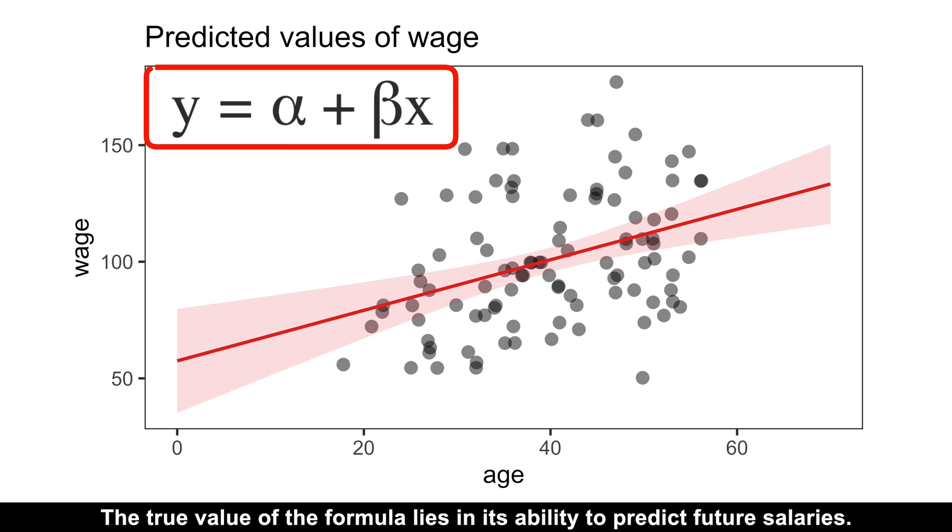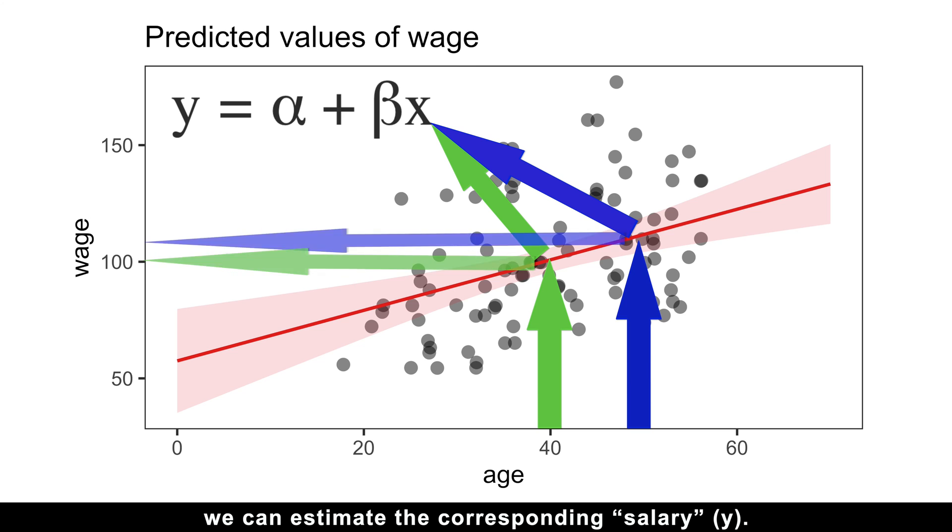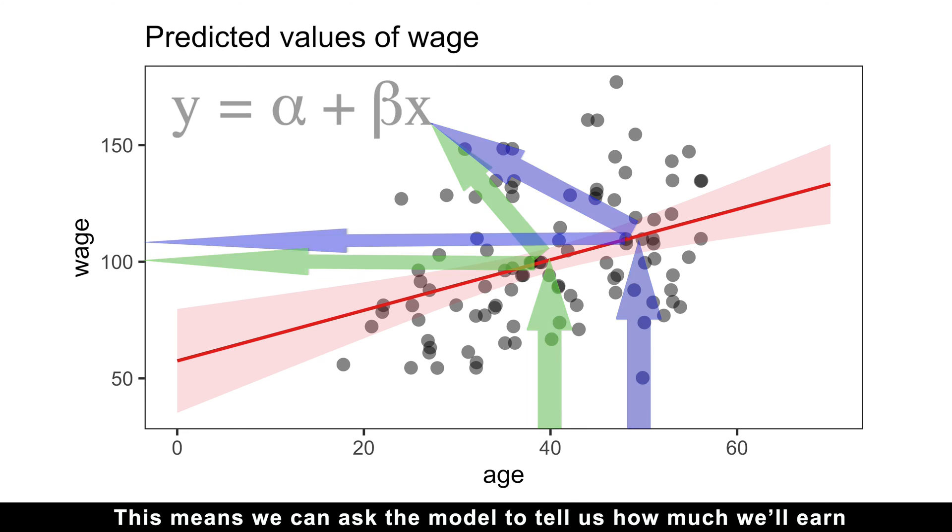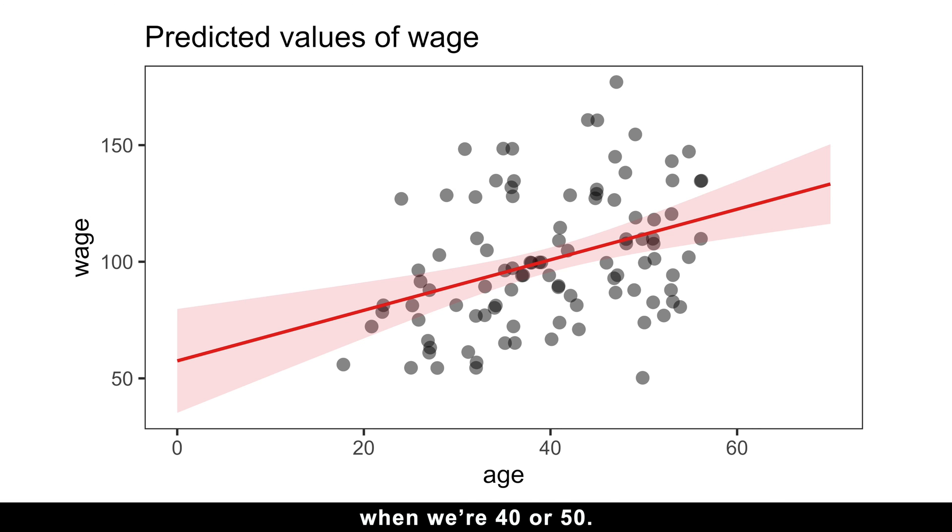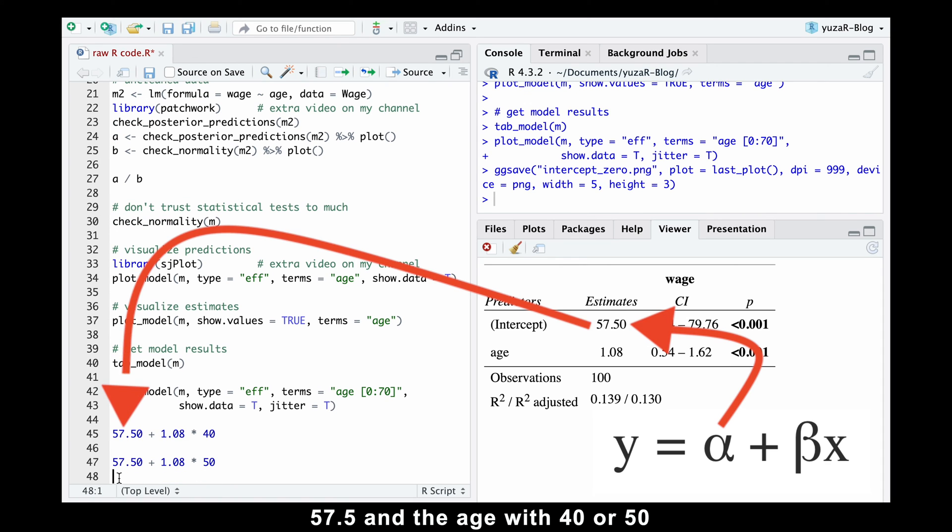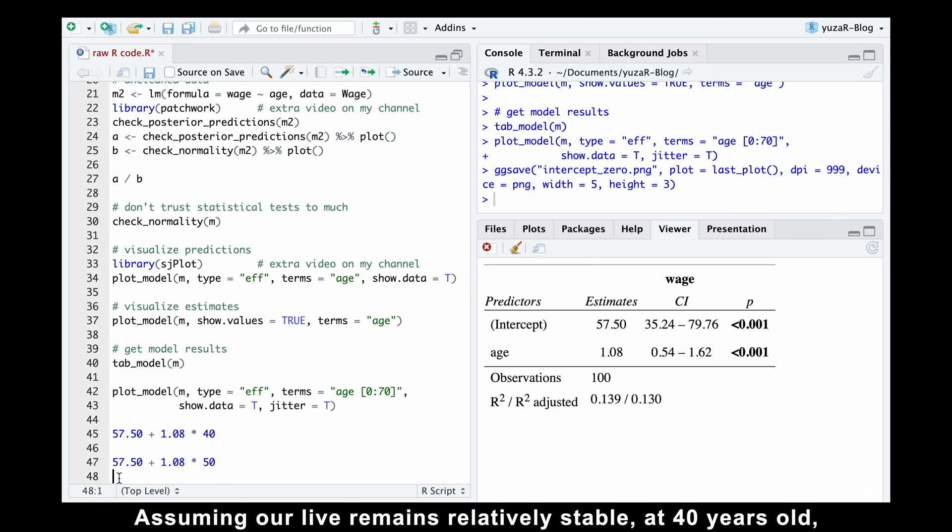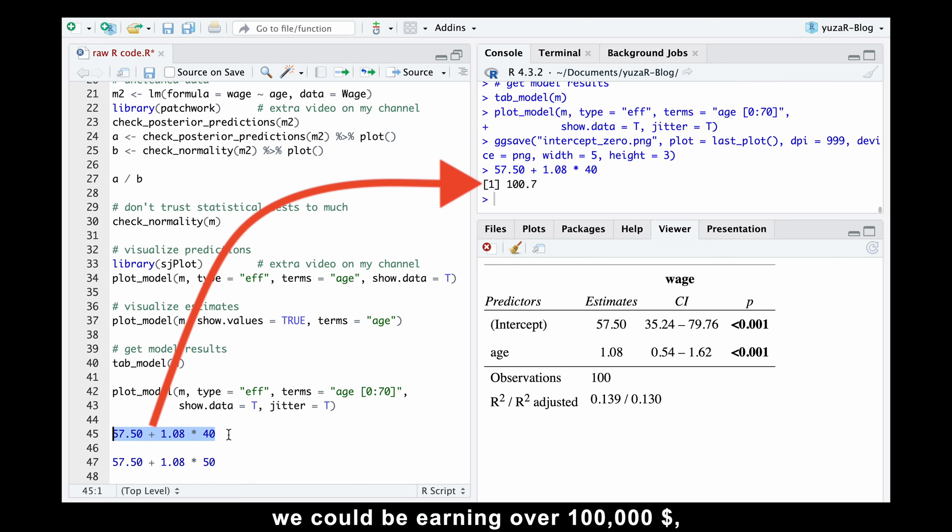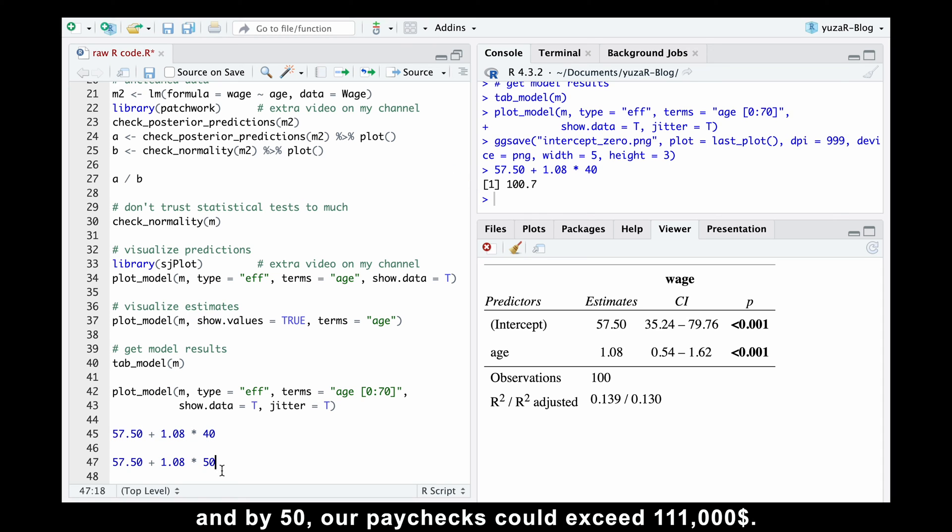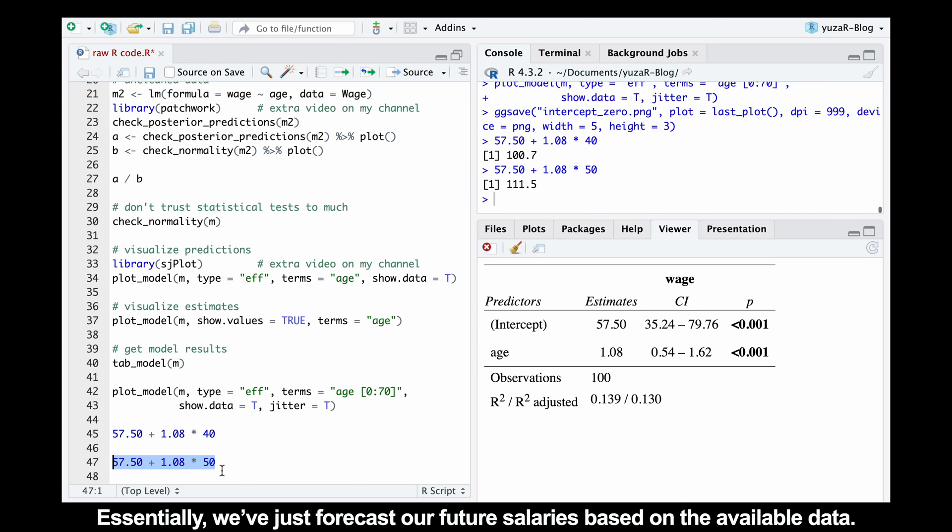The true value of the formula lies in its ability to predict future salaries. By plugging any age value into the model equation, we can estimate the corresponding salary. This means we can ask the model to tell us how much we'll earn when we are 40 or 50. For that, we'll simply replace our alpha with the value of the intercept, 57.5, and the age with 40 or 50. Assuming our life remains relatively stable, at 40 years old, we could be earning over 100Ks, and by 50, our paychecks could exceed $111,000. Essentially, we've just forecast our future salaries based on the available data.